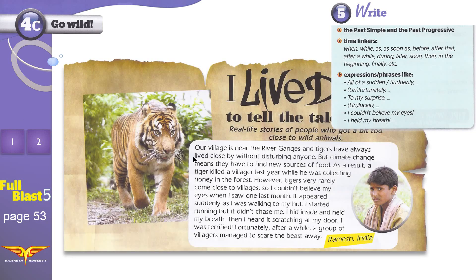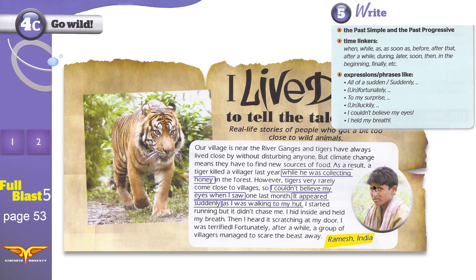What are we searching for? What do we need to find? We need to find past simple and past progressive. We need to find time linkers like 'when,' 'while,' 'as,' 'as soon as,' etc. We need to find expressions and phrases like 'all of a sudden,' 'suddenly,' and 'fortunately.' Now look — these are some of those past simple and past progressive verbs, time linkers, etc.